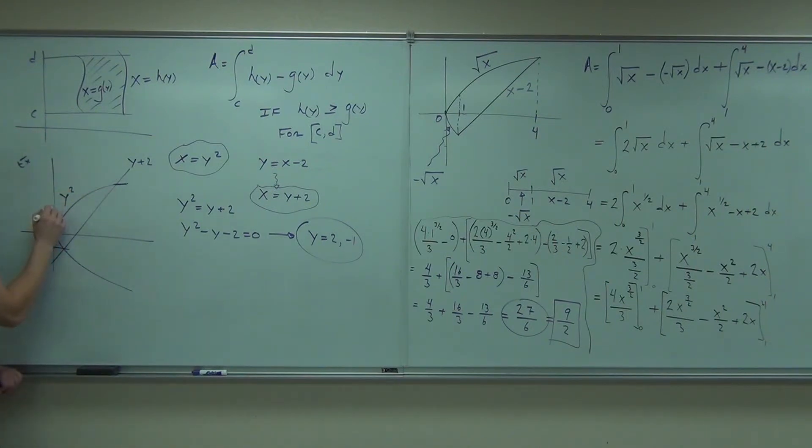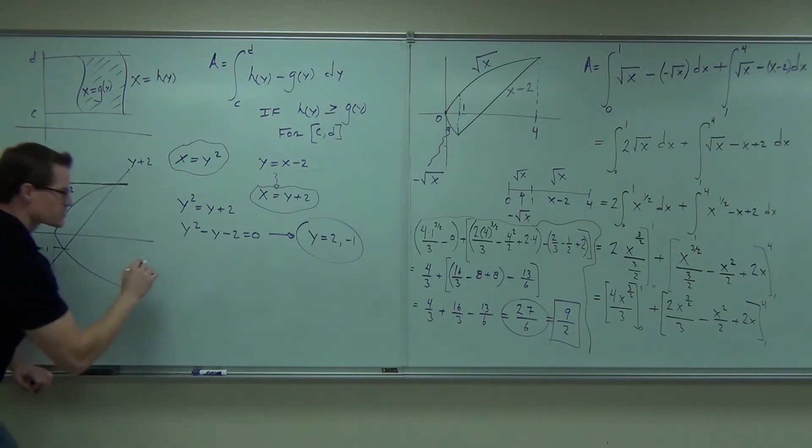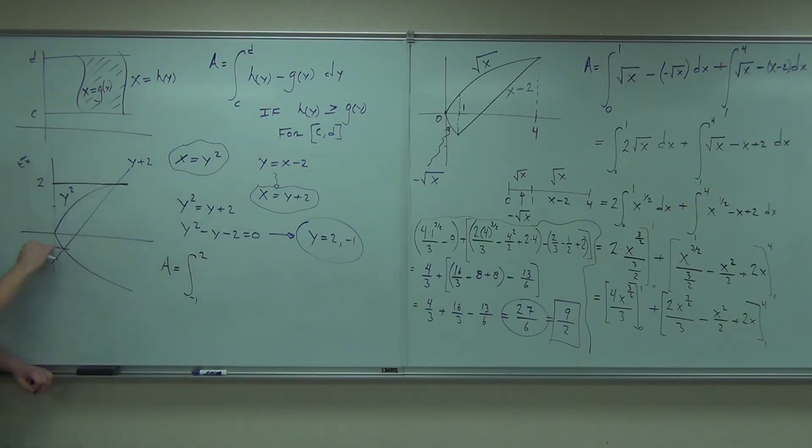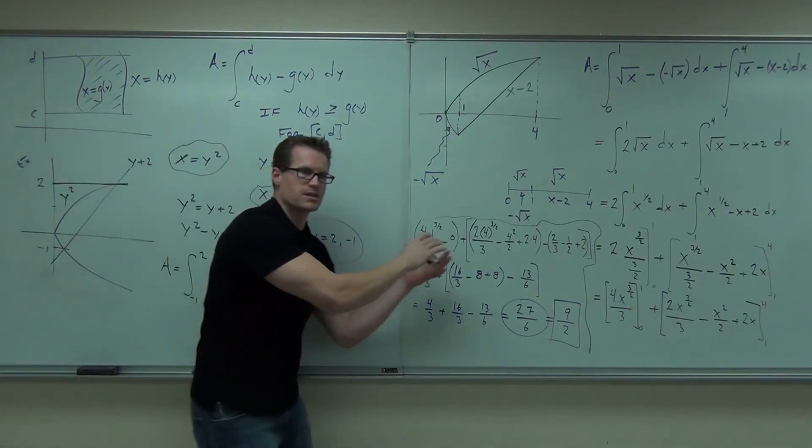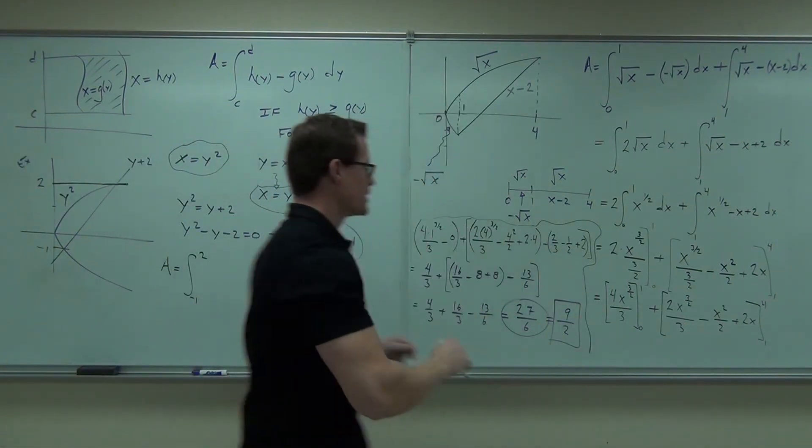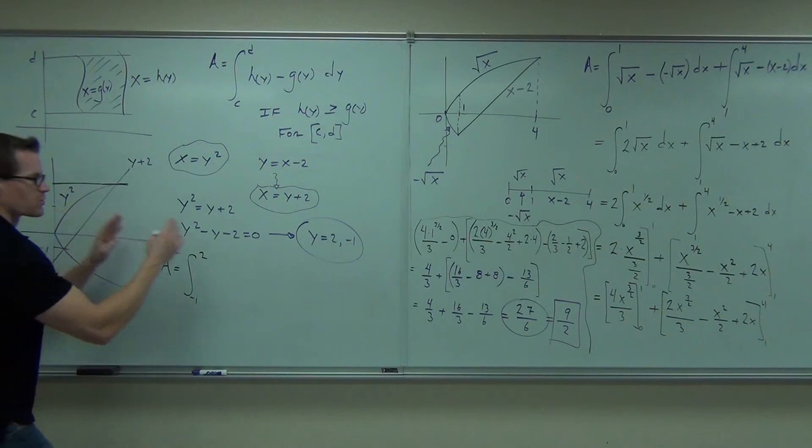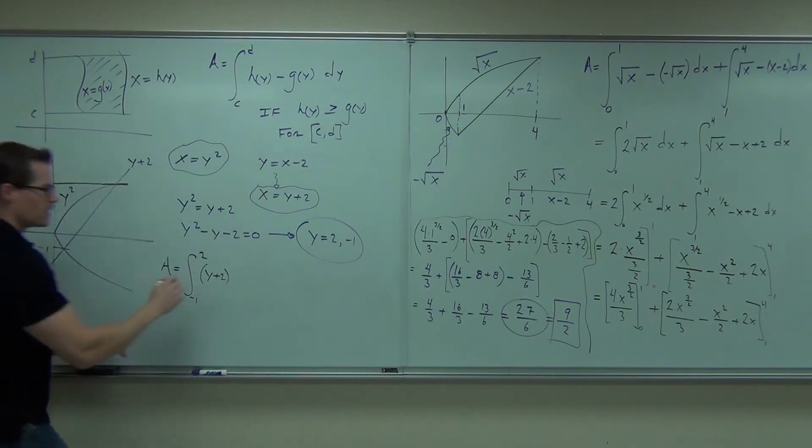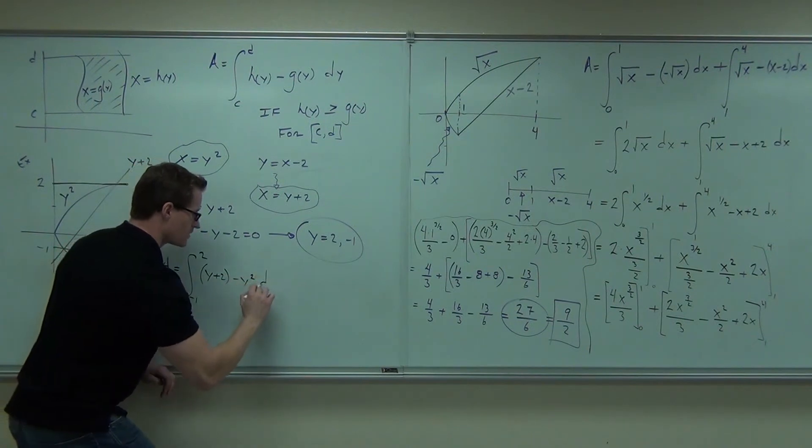Where's my integral end? So, my area is from negative 1 to 2. Notice that's from c to d, negative 1 to 2. That's why I had my y's. It's in terms of y, negative 1 to 2. The function on the right was y plus 2. The function on the left was y squared dy.